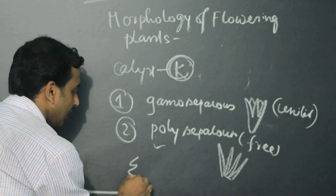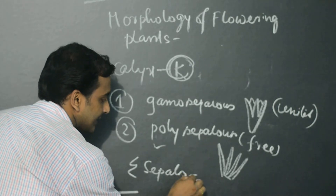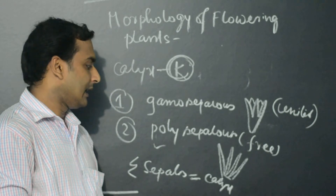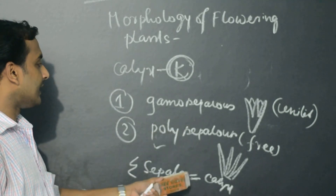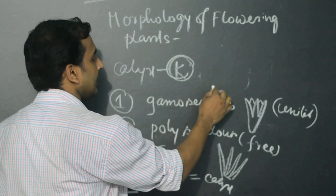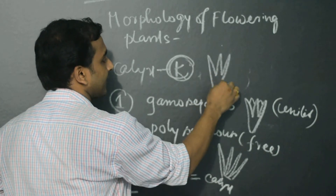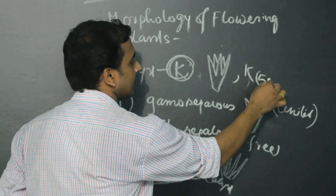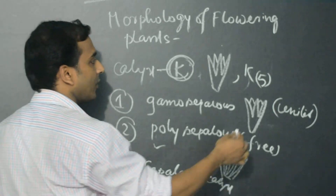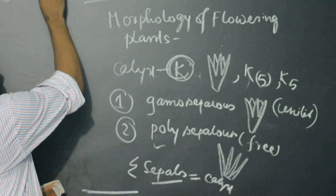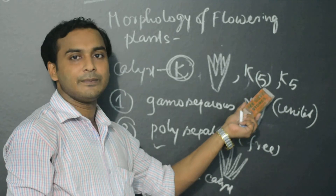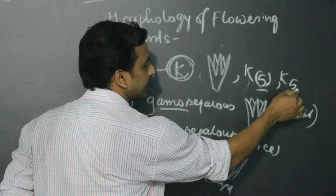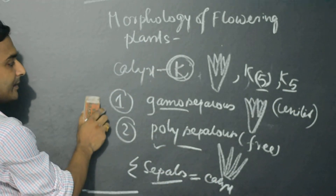The summation of sepals is equal to Calyx — Calyx is composed of sepals. For example, when Calyx consists of 5 sepals, that is written as K5. If it is Gamosepalous, the symbol is K(5) with brackets. If it is Polysepalous, it is K5 without brackets. K(5) means Gamo, and K5 without brackets means Poly.